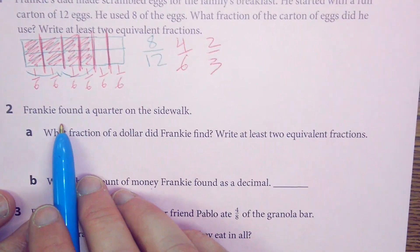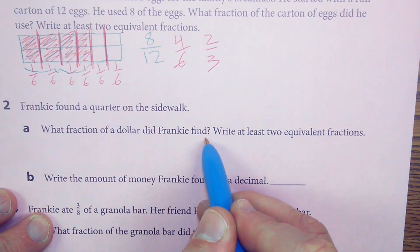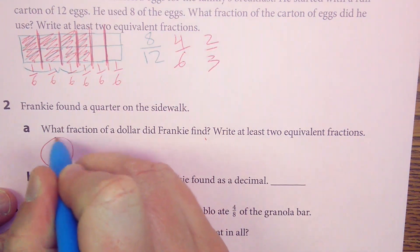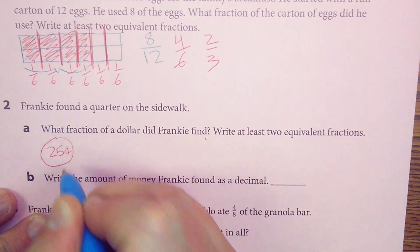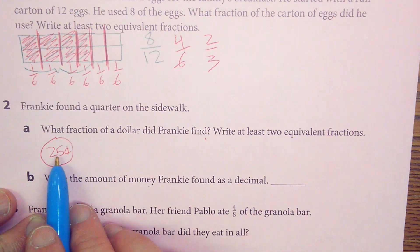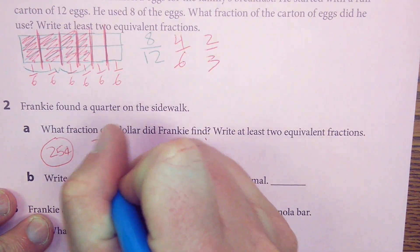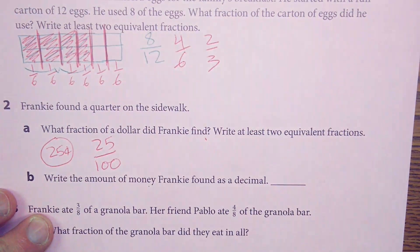Frankie, oh my goodness, this whole thing is about Frankie. He found a quarter on the sidewalk. What fraction of a dollar did Frankie find? He found a quarter. So he found a good old twenty-five-cent piece on the floor, a quarter. Well, what fraction of one dollar is that? Well, twenty-five cents is how much of a dollar? Well, that would be twenty-five cents out of one hundred cents, right?